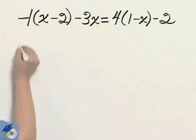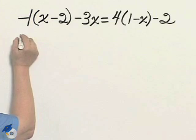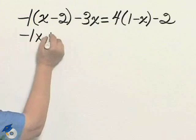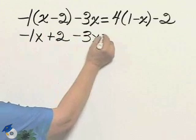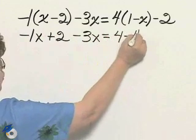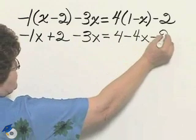Let's put in a 1 and then distributing minus 1x plus 2 take away 3x equals 4 take away 4x take away 2.